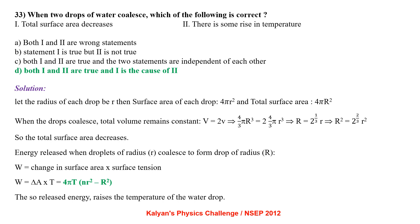When two drops of water collide: total surface area decreases and there is a rise in temperature. Let radius of each drop be r; surface area of each = 4πr². When drops coalesce, total volume is conserved: (4/3)πR³ = 2×(4/3)πr³, giving R² = 2^(2/3)·r². So total surface area decreases. The released energy W = T·ΔA = 4πT(Nr² − R²) raises the temperature of the resulting drop.